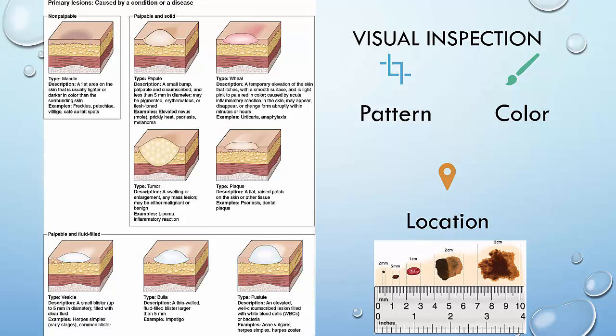For the primary lesions, they can be caused by a condition or a disease. They can be non-palpable, such as a macule, or palpable and solid — examples are papules, wheals, tumors, and plaques. Lesions can also be palpable and fluid-filled; some examples are vesicles, bullae, and pustules.